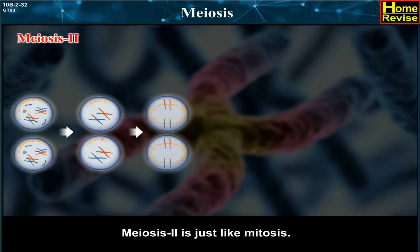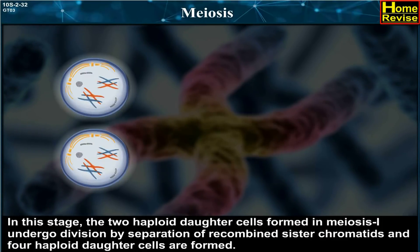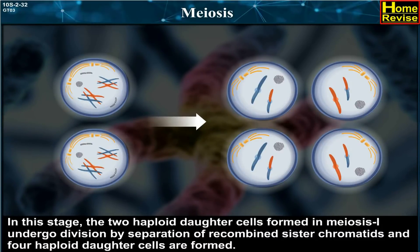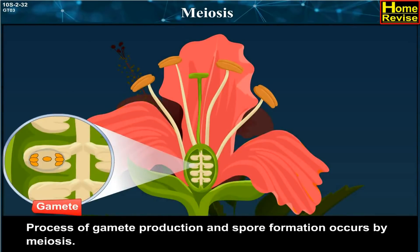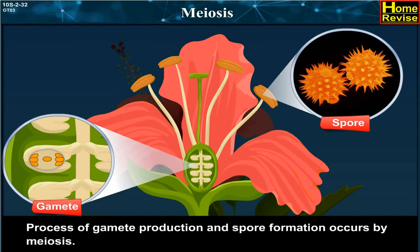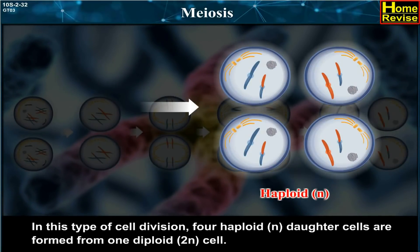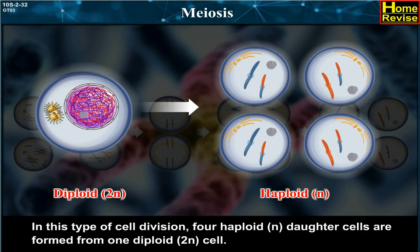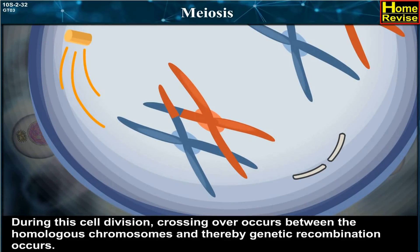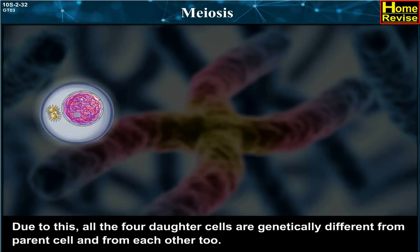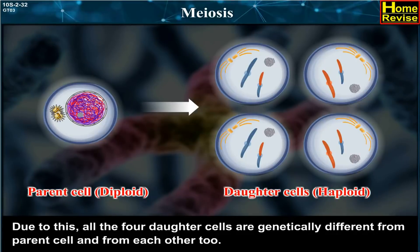Meiosis second is just like mitosis. In this stage, the two haploid daughter cells formed in meiosis first undergo division by separation of recombined sister chromatids, and four haploid daughter cells are formed. The process of gamete production and spore formation occurs by meiosis. In this type of cell division, four haploid (N) daughter cells are formed from one diploid (2N) cell. During this division, crossing over occurs between homologous chromosomes, causing genetic recombination, so all four daughter cells are genetically different from the parent cell and from each other.